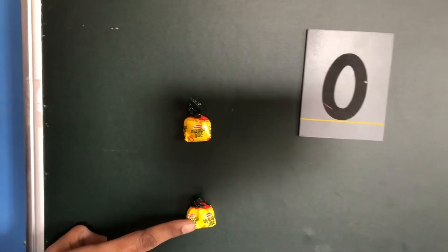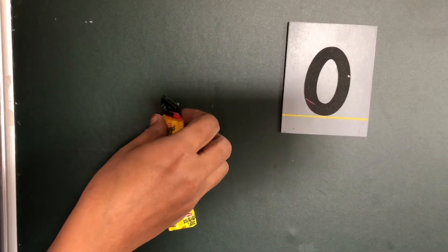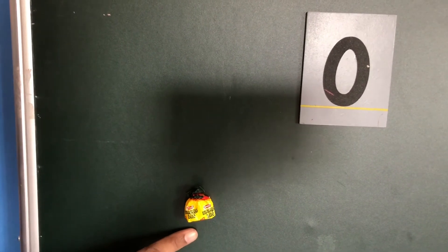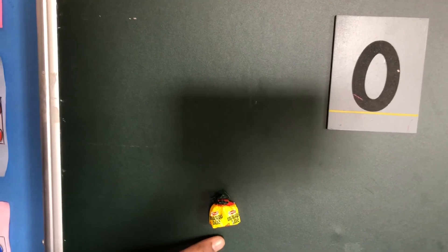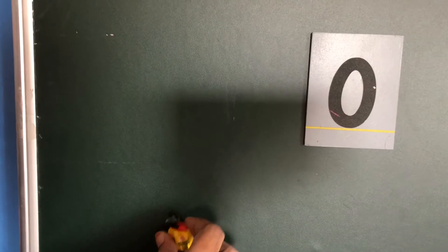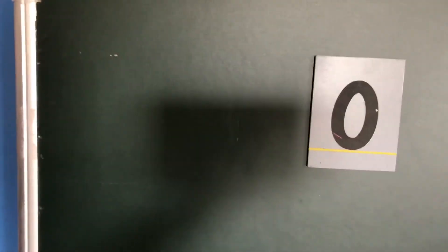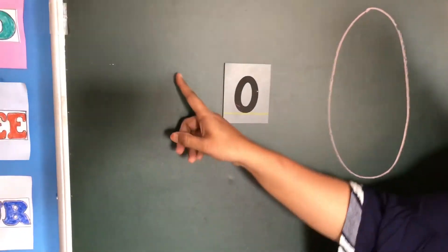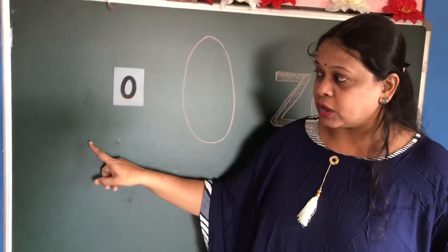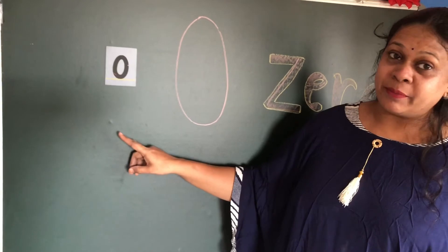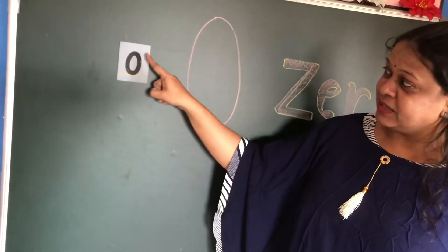Now how many remaining? One and two. I've taken one for my brother also. Now if I've removed one, how many is remaining? Only one. Now my little sister also wants chocolate — she's crying, so I'm giving it to her also. I've given all the chocolates. Now how many chocolates are there? There is no chocolate.